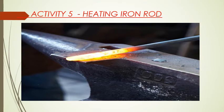Activity 5: Heating of iron rod. When you heat an iron rod in the flame, it changes its color. Once it is removed from the flame, it will get back to its original color after some time. These are the best examples of physical changes.